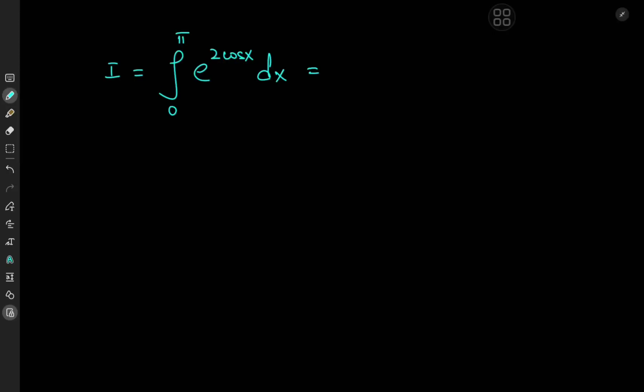Greetings and welcome back. This is your boy Kamal once again with yet another very interesting integral. Today we have the integral from zero to pi of e to the two times cosine x dx. The ingredients of the integrand are pretty simple: we have an exponential function and a trig function. The problem is that the trig function is the argument of the exponential function, and we also have a factor of two thrown in there.